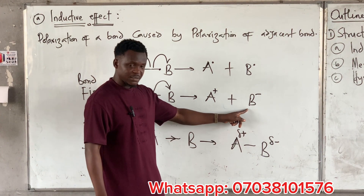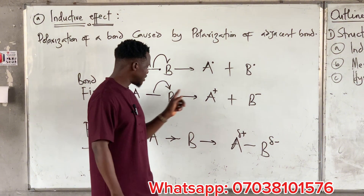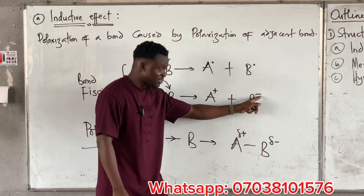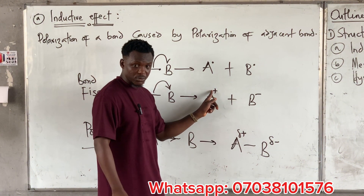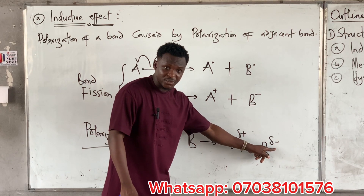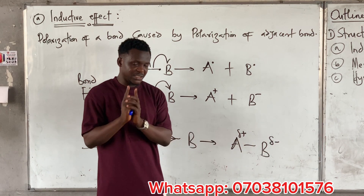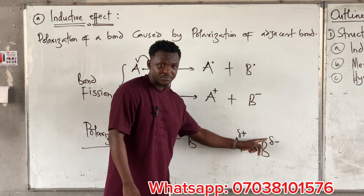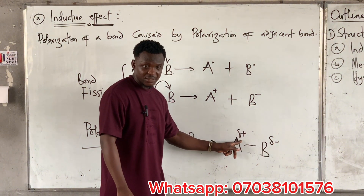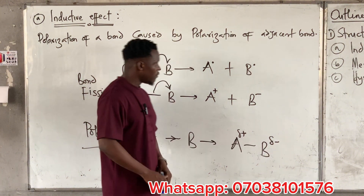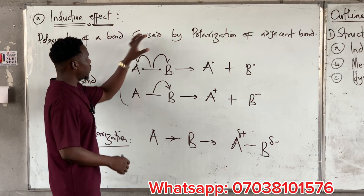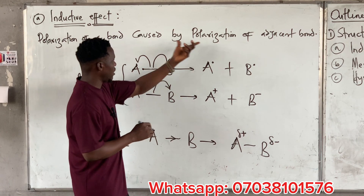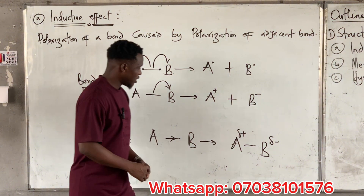The side with partial minus means that atom has pulled more electrons to itself; the side with partial plus means that atom has lost some electrons to the other. In bond fission we broke the bond — so there is no longer a bond — giving full minus and full plus. Whereas in polarization you see partial minus and partial plus. So in inductive effect, you are mostly going to be seeing partial charges.